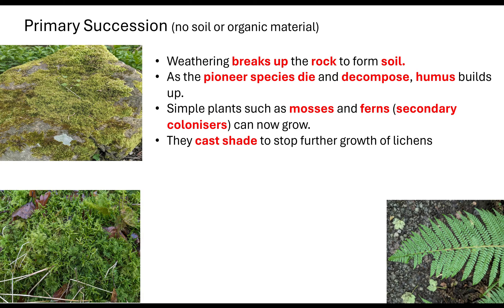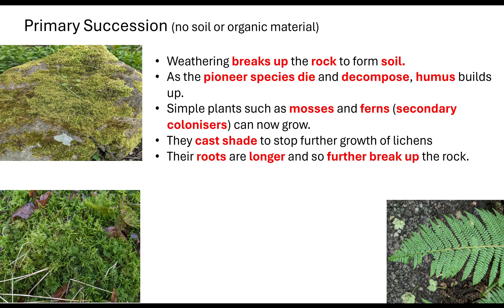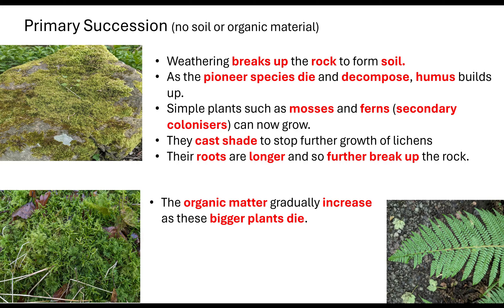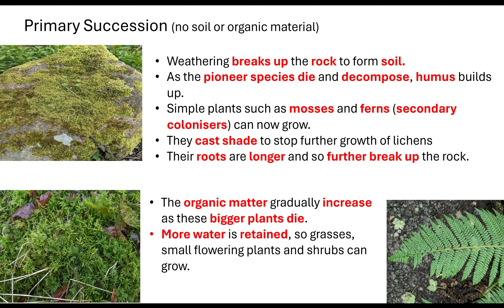These simple plants — mosses and ferns — are going to be a bit bigger than our pioneer species, so they will cast shade, which will further stop the growth of any remaining lichen. These simple plants will also put longer roots into the rocks and soils, further breaking up those rocks. That results in more organic matter increasing as these bigger plants also die at some point. More water can now be retained within the soil, meaning tertiary colonisers — things like grasses, small flowering plants, and shrubs — can start to grow.